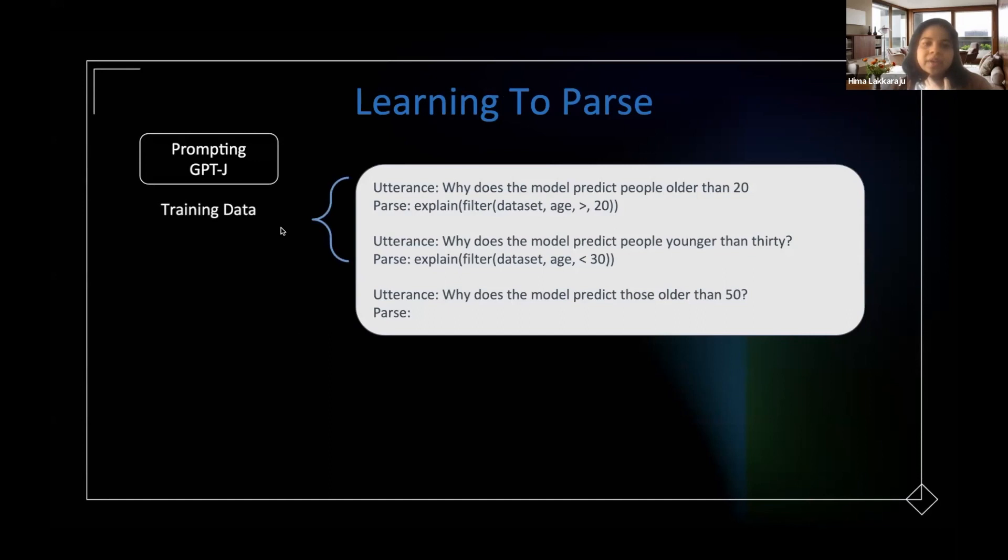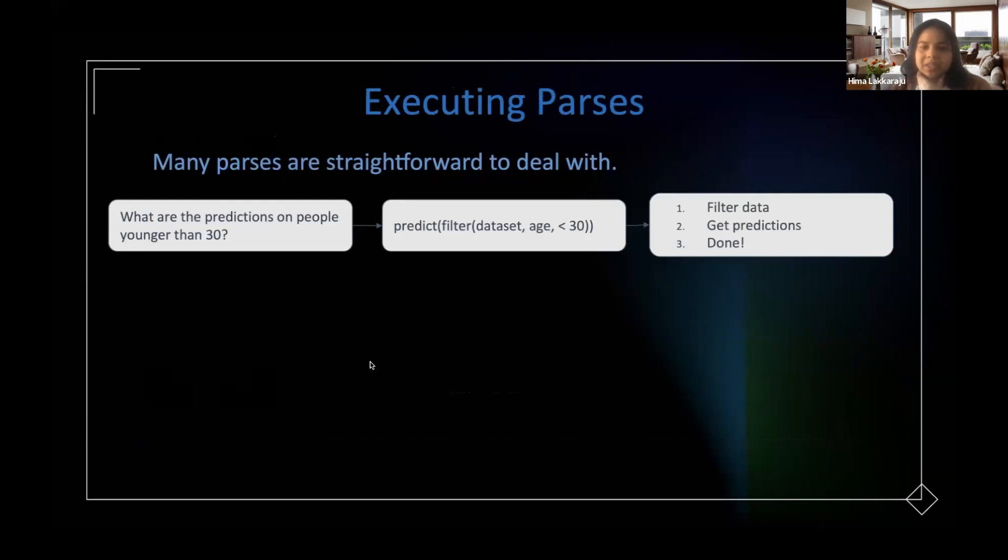The way we were doing it was essentially we had a bunch of training data that we created ourselves which have this input utterance which the users will provide, like the questions that they will ask, and then this kind of a parse which maps it to essentially commands that we can use internally. We tried both in-context learning as well as fine-tuning and found that fine-tuning is a lot more effective when it comes to the language model mapping a user utterance in natural language to some sort of a command or an internal representation that we could use.